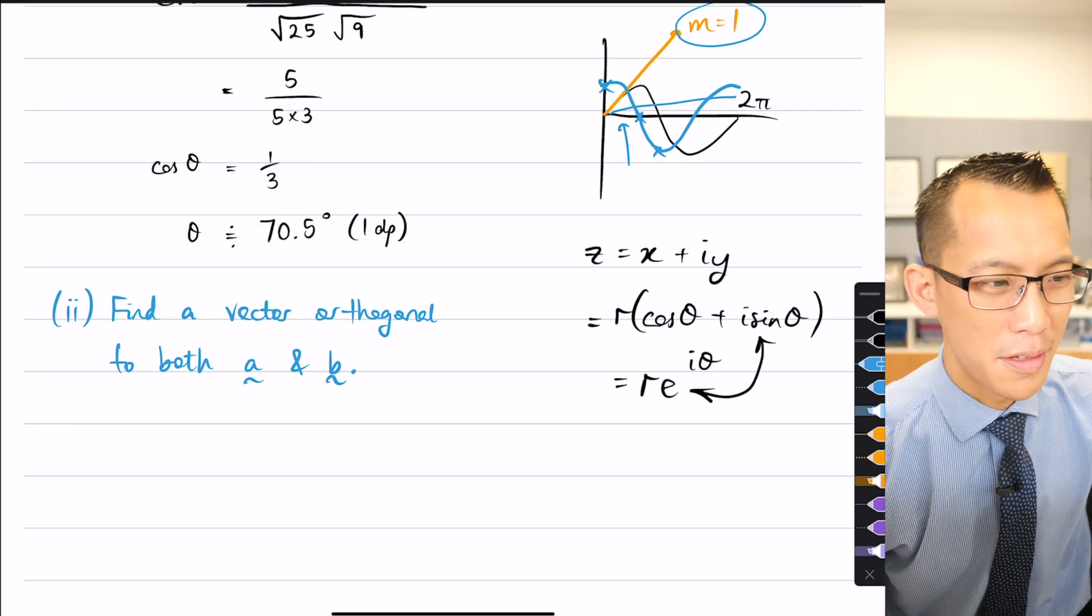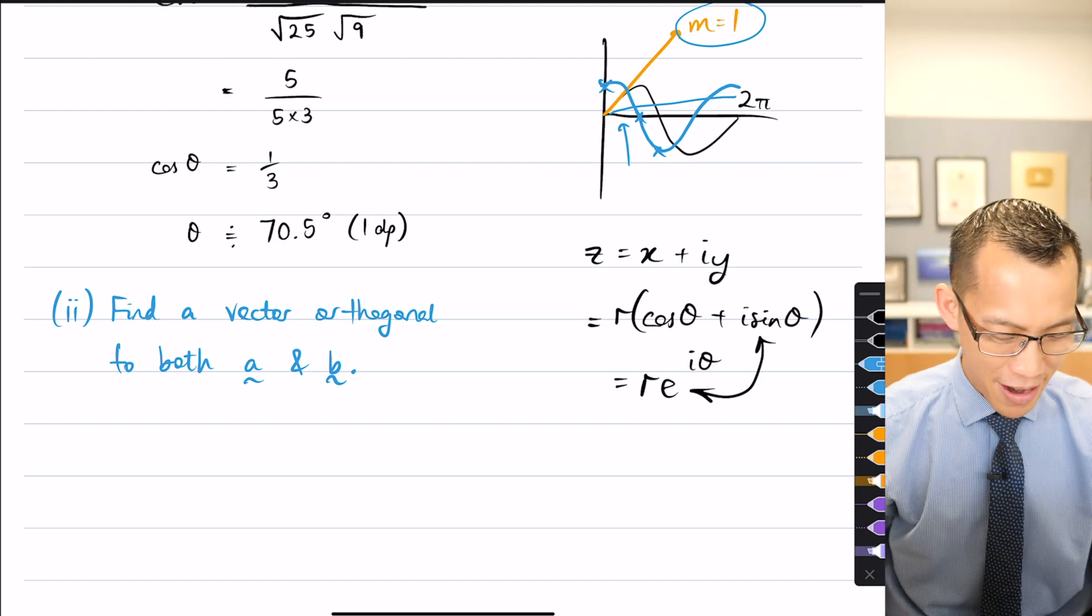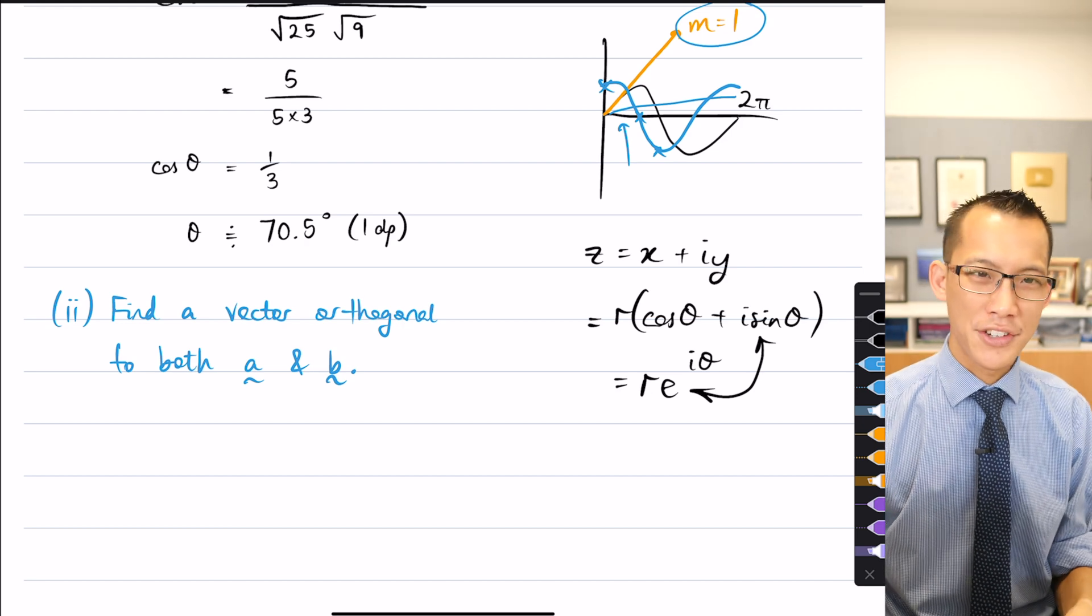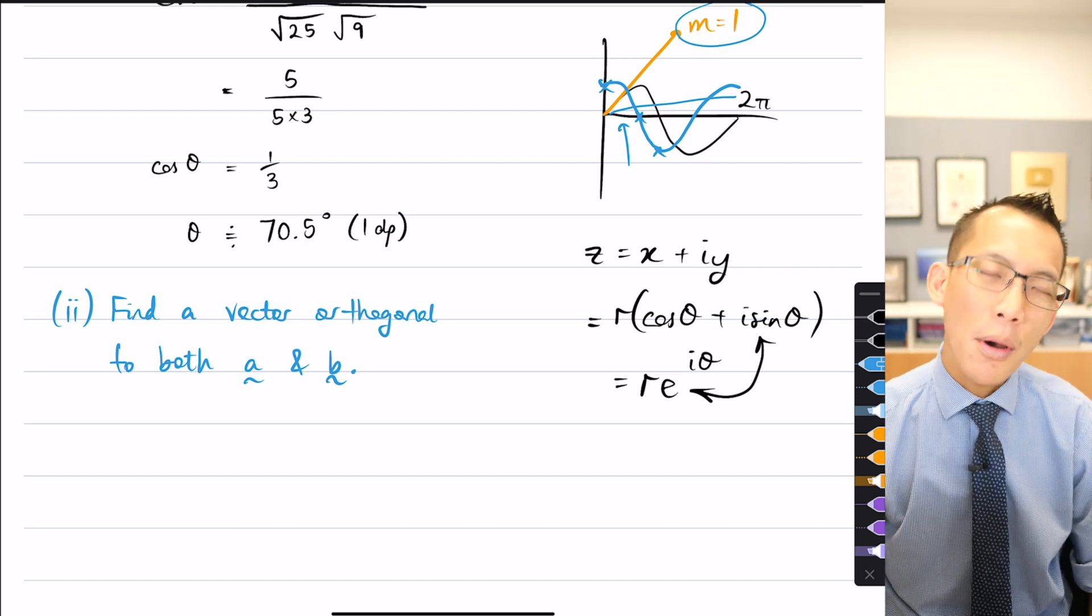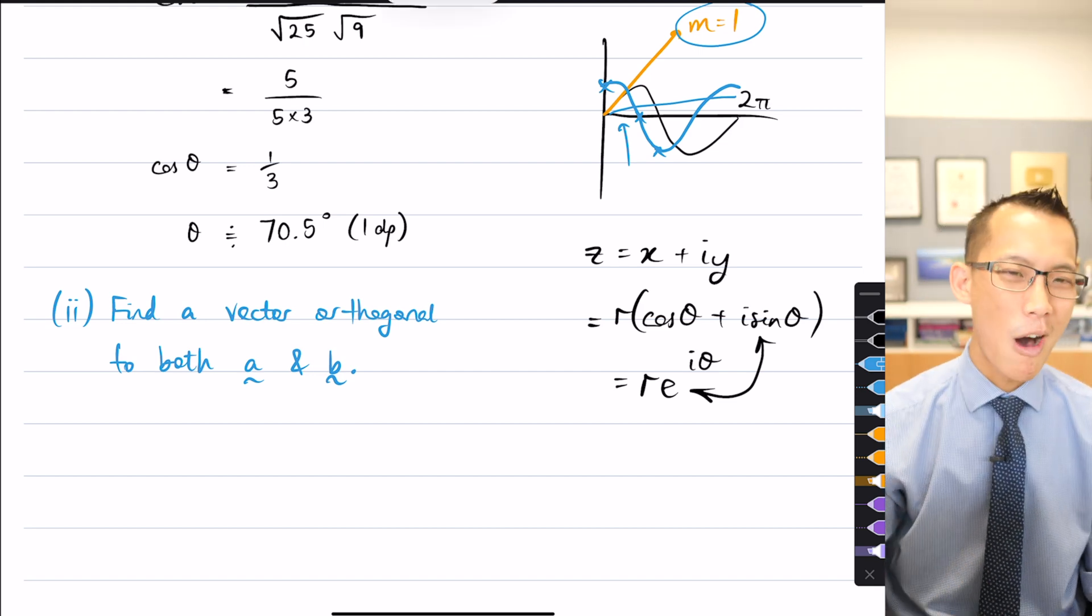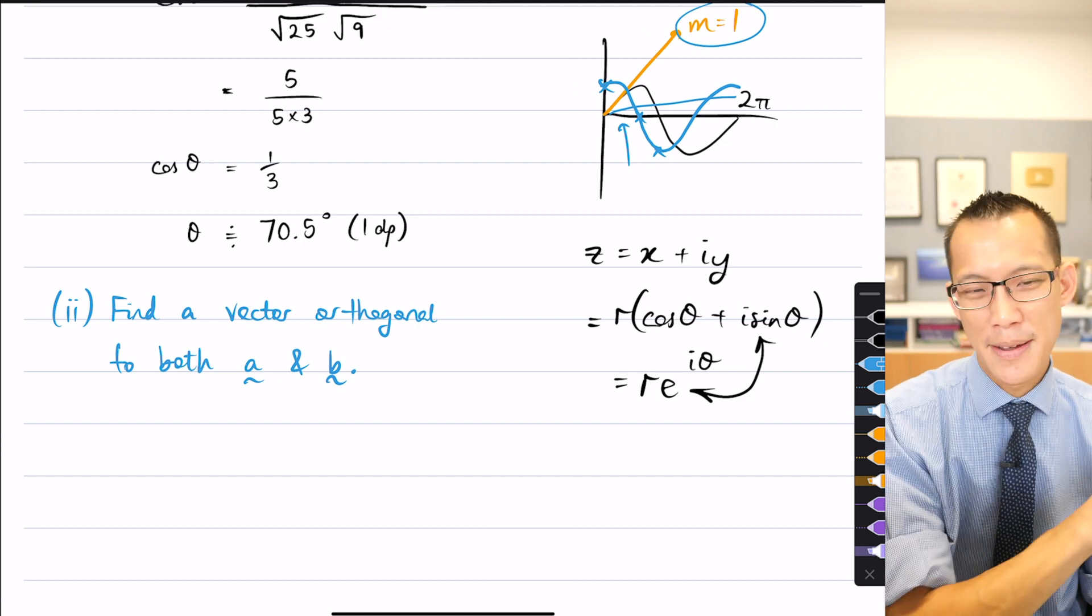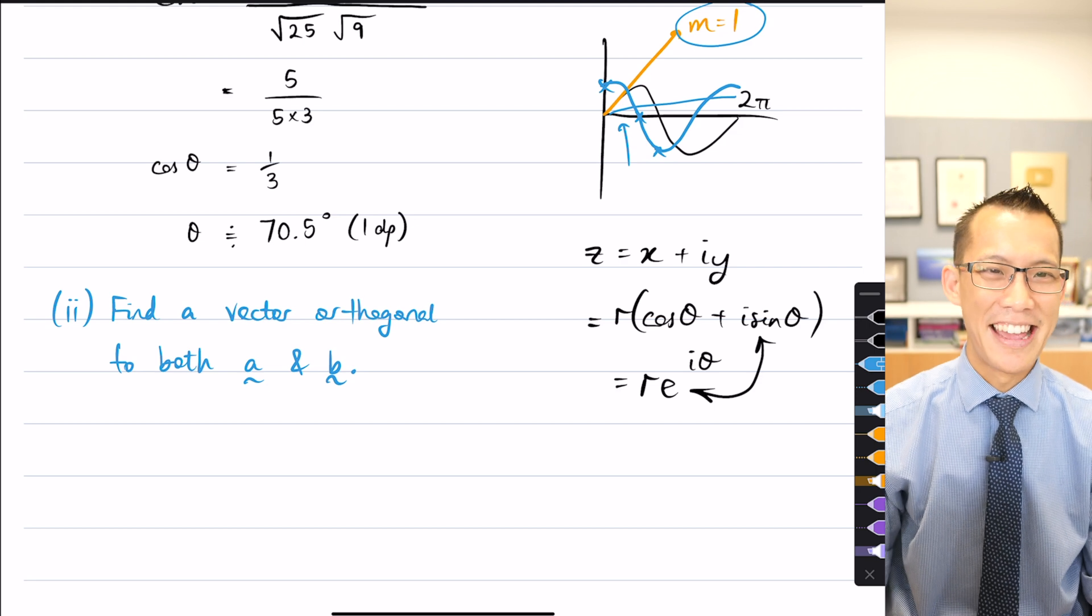Find a vector that's orthogonal to both. Okay, now before we actually start doing this question, I just want to point out it's three-dimensional and it has to be three-dimensional. You can't pose this question in two dimensions. I wonder if anyone can tell me why this is exclusively a three-dimensional question and it's not allowed to be a two-dimensional question. Any thoughts?